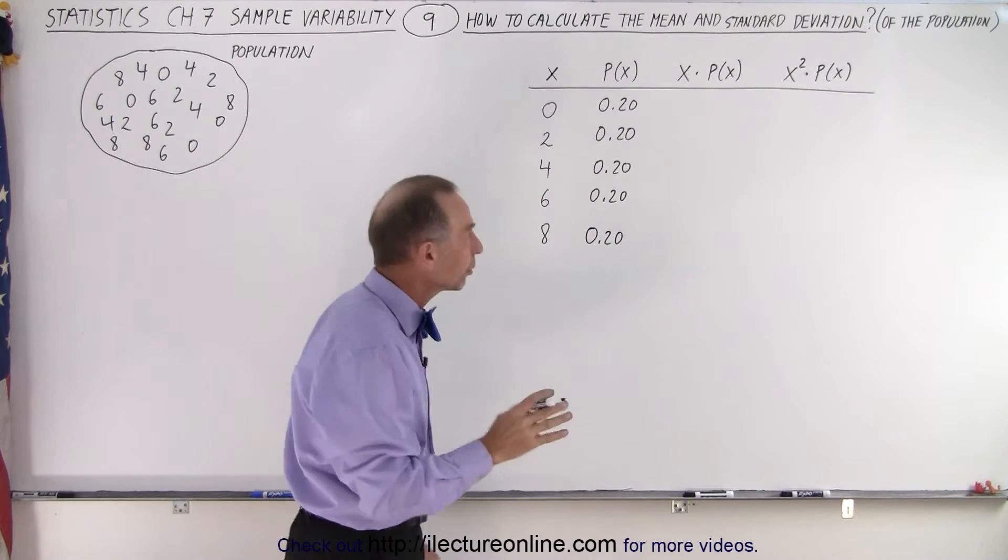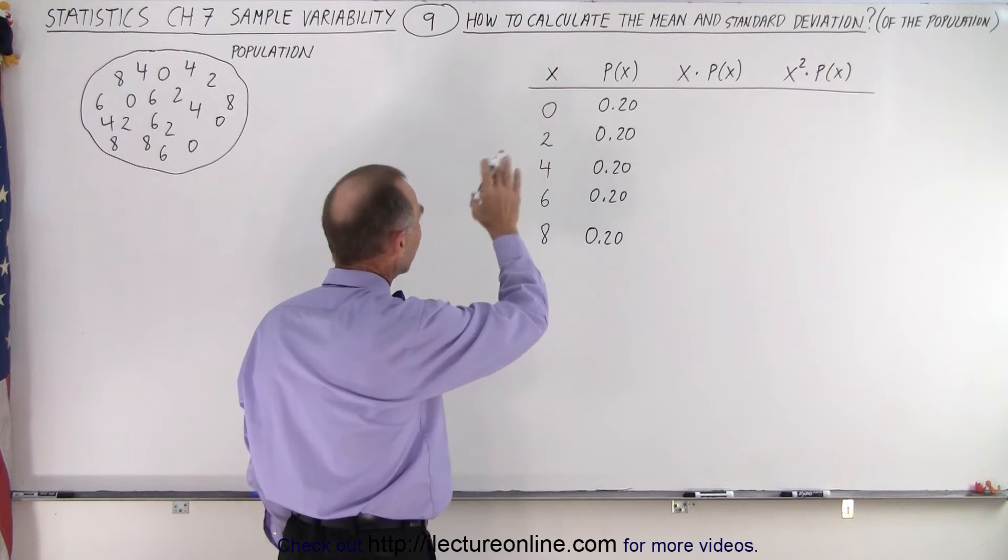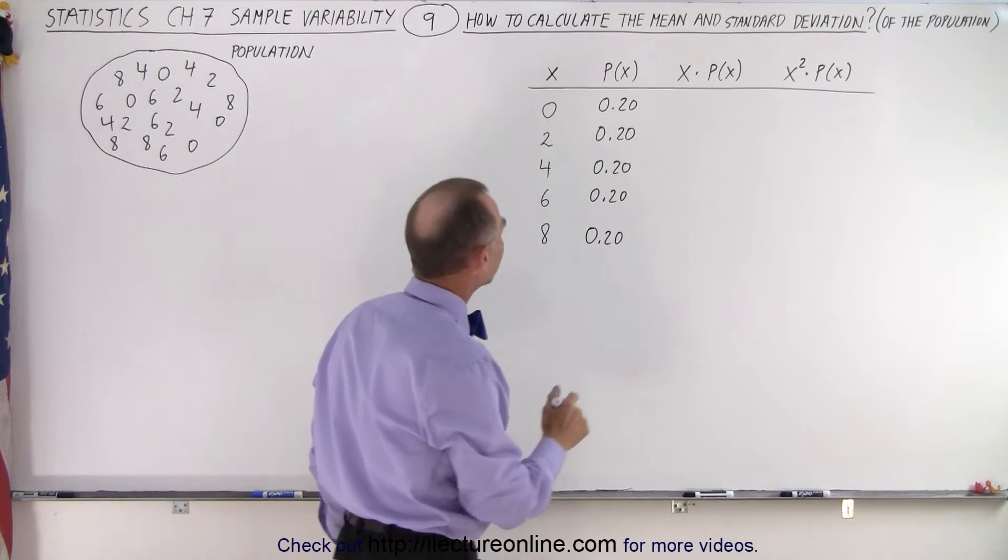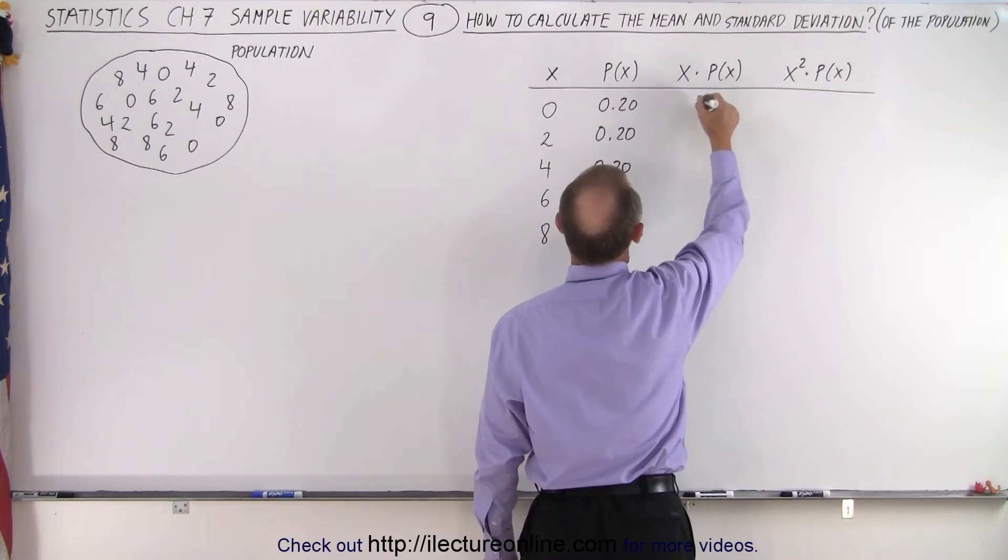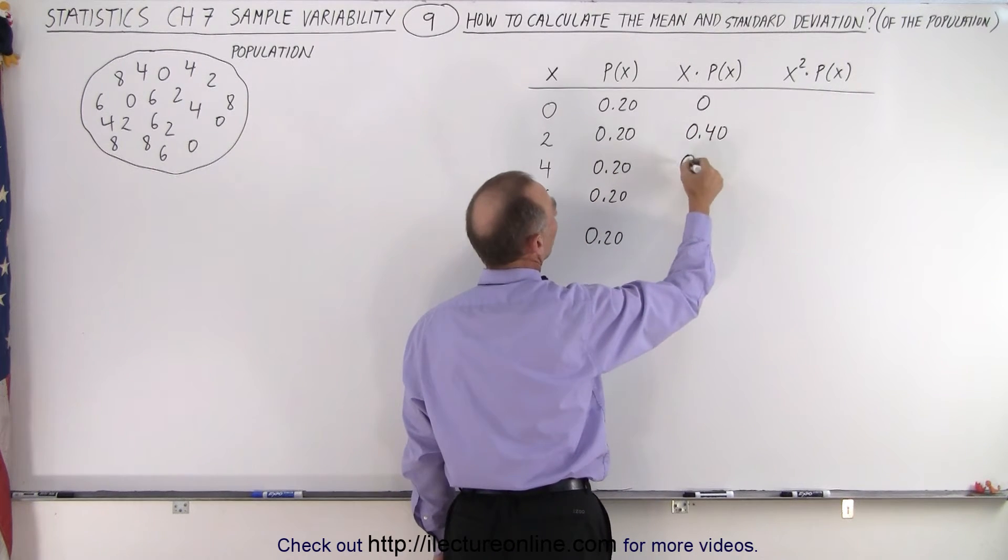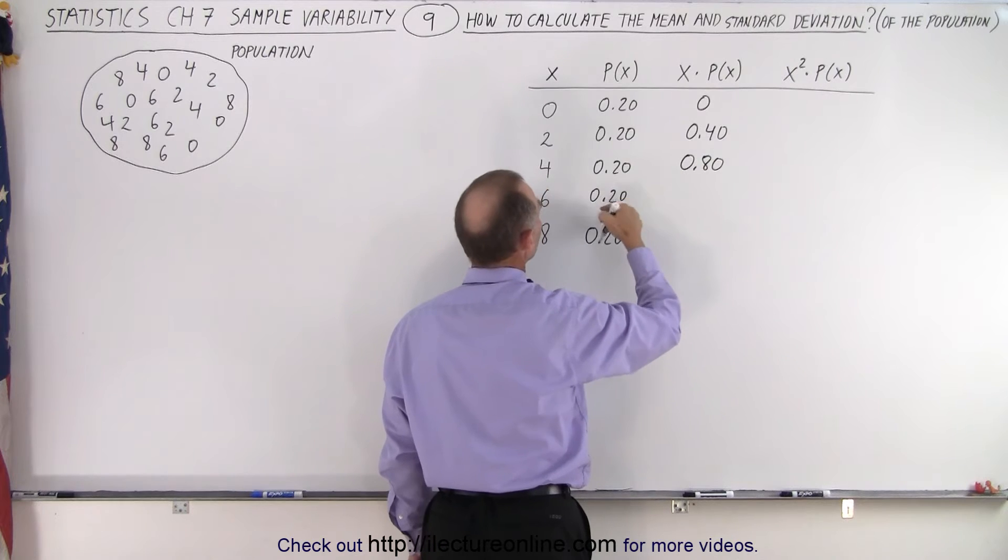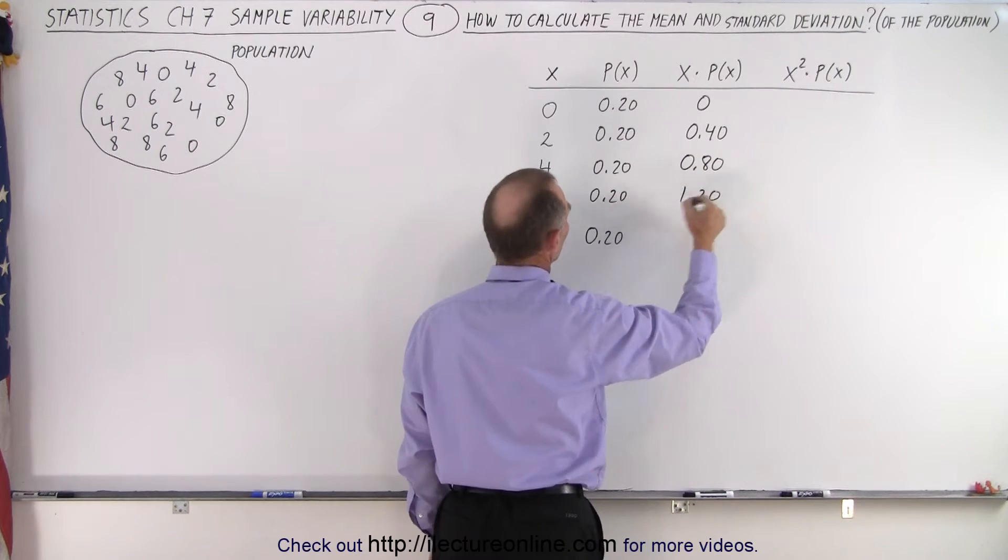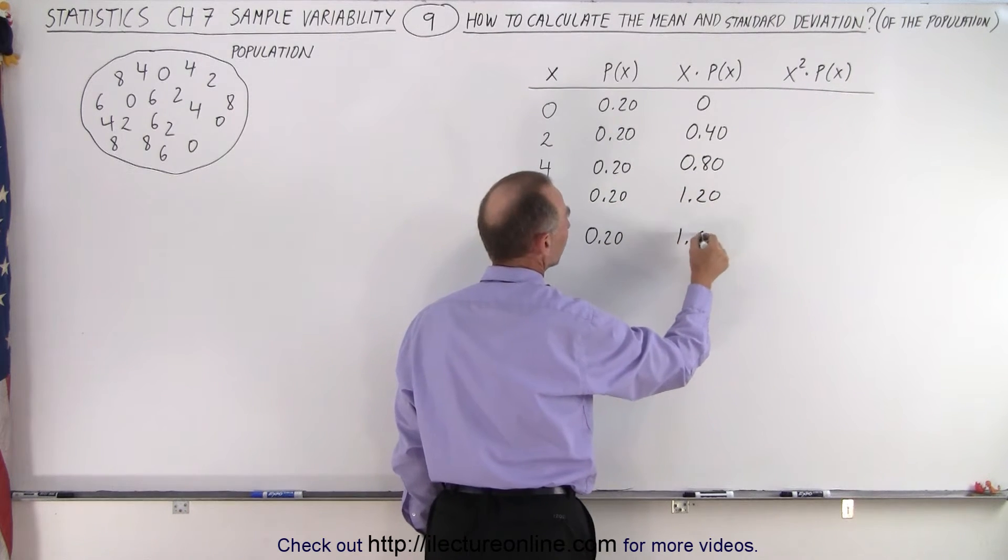So now what we're going to do is we're going to multiply those two together, the number and the probability of getting that number. So in this case, we get a 0. Here we get a 0.40. Here we get a 0.80. Here we get a 1.20, and here we get a 1.60.